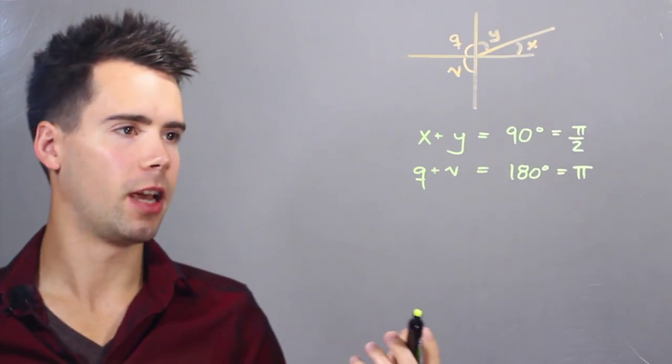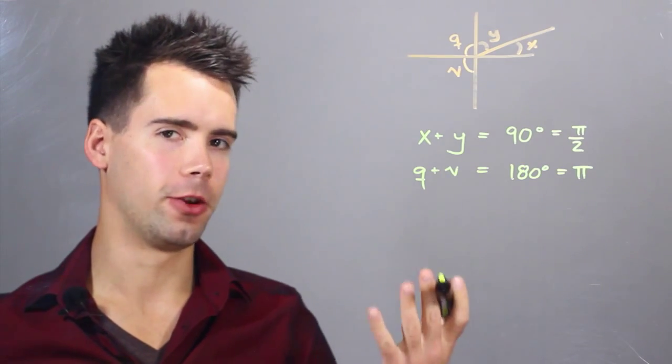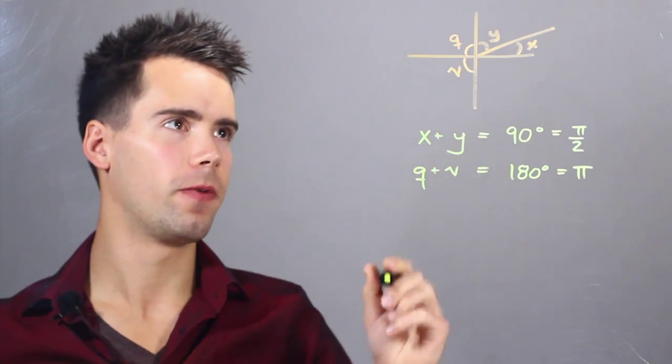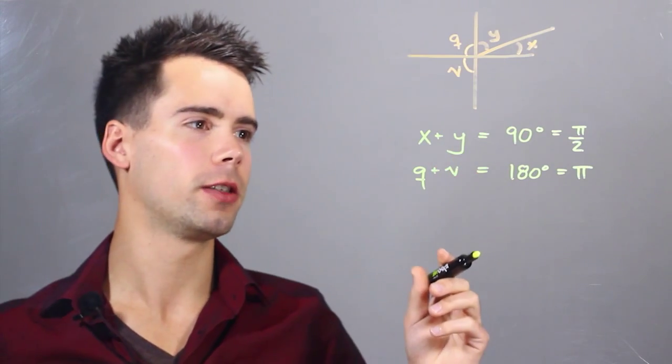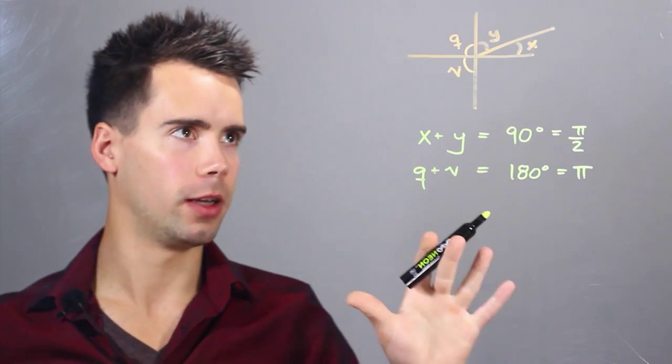Now in this example, if v happened to be 90 degrees, which it is based on the drawing, we find that q is also equal to 90 degrees. Now it doesn't seem so useful in this example.